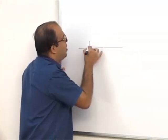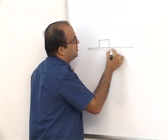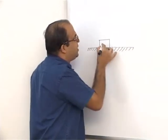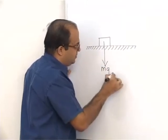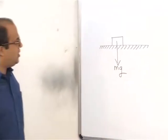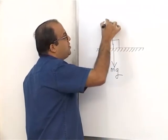Suppose a block is resting on a surface. The weight of a block will be acting vertically downwards. Normal reaction will act perpendicular to the surface.